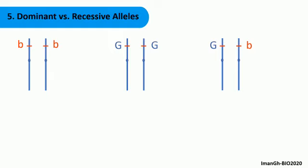If both alleles are brown, then the phenotype of the mouse will be brown. Similarly, if the two alleles are gray, then the fur color will be gray.